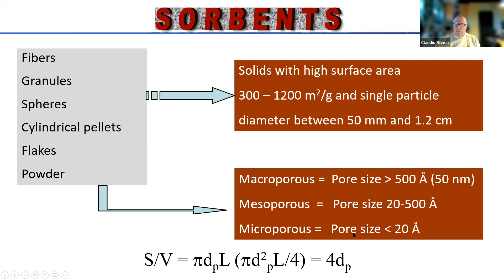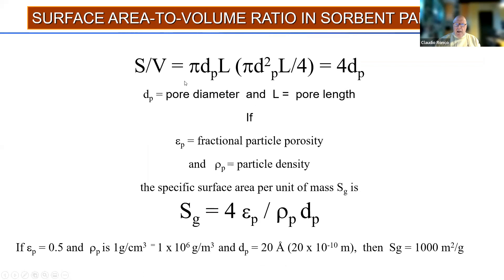The resin can be macroporous, mesoporous, or microporous depending on the diameter of the pores. Pore diameter and length are important. Fractional particle porosity and particle density are also important. Specific surface area is of course important — approximately 1000 square meters per gram.